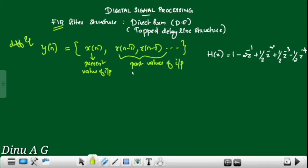It does not depend on past values of output — that is y(n-1), y(n-2), etc. There is no recursive (feedback) function. This is the non-recursive function example: FIR filter.